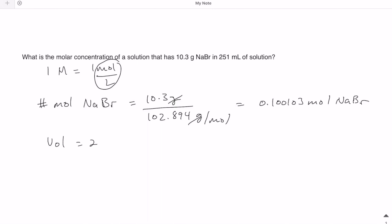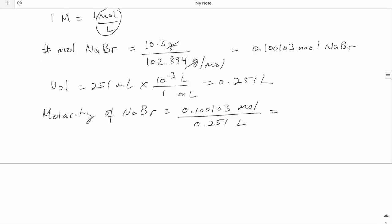The volume is 251 milliliter, but of course, to convert that to liter, it will end up being 0.251 liter. So, then the molarity of NaBr that we're given is just going to be 0.100103 moles over 0.251 liter, and that would give us 0.399 moles per liter, which can just be written as molar.